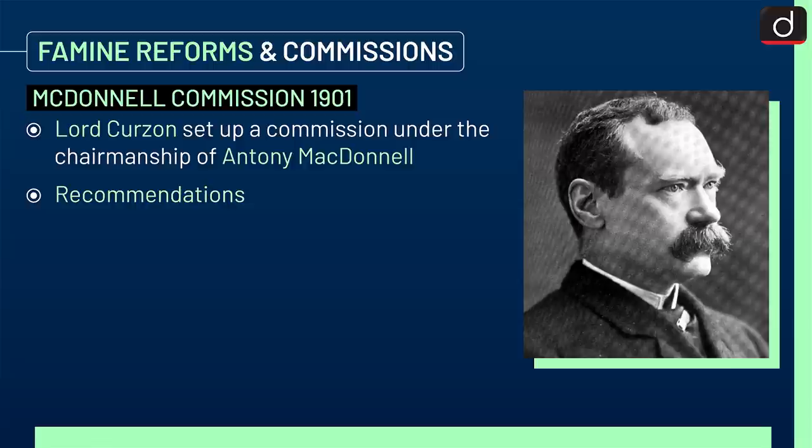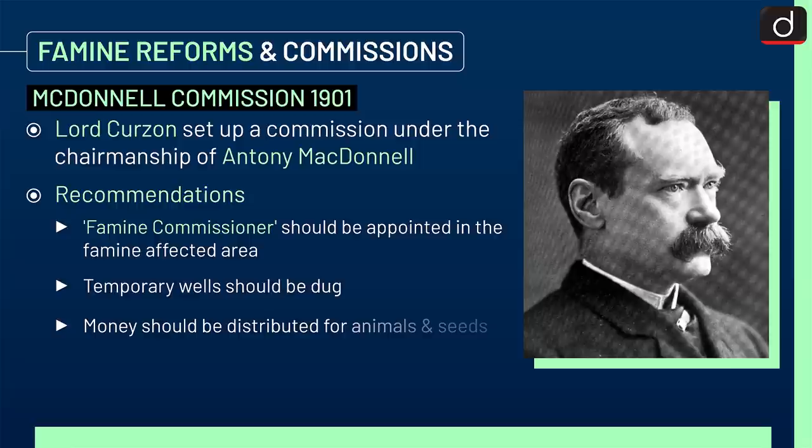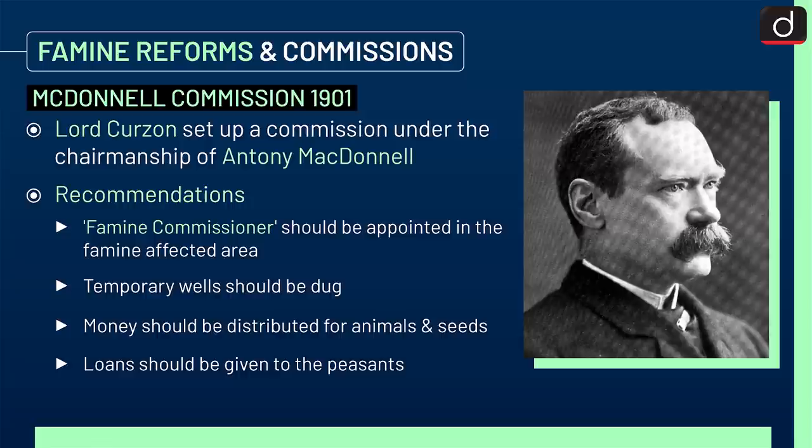Lastly, the McDonnell Commission 1901. Lord Curzon set up a commission under the chairmanship of Anthony McDonnell. Recommendations included: a famine commissioner should be appointed in famine-affected areas, temporary wells should be dug, money should be distributed for animals and seeds, and loans should be given to the peasants.